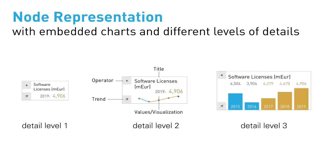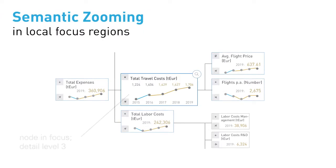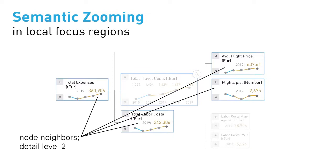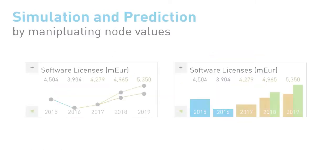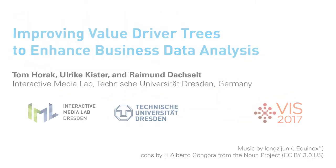We present first concepts evolving node representations with embedded charts and different levels of details, semantic zooming and local focus regions utilizing these levels of details, and simulation and prediction by directly manipulating node values.